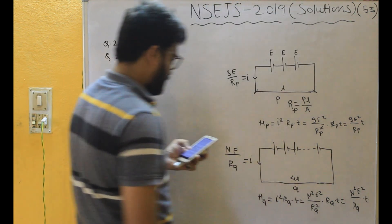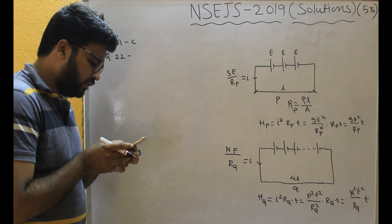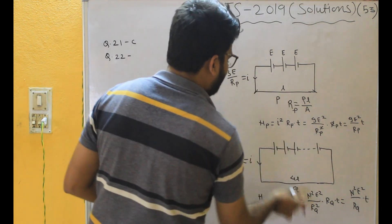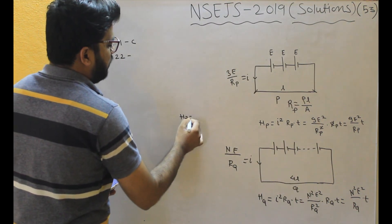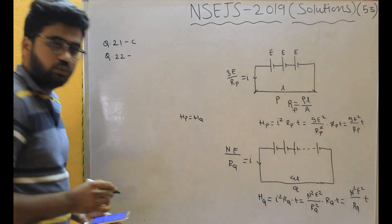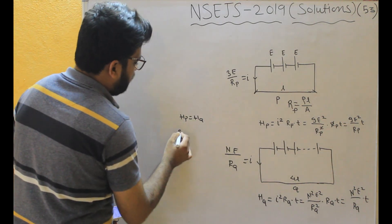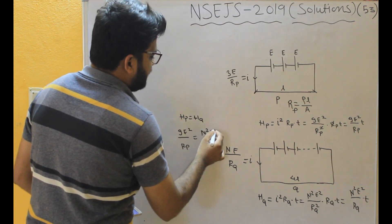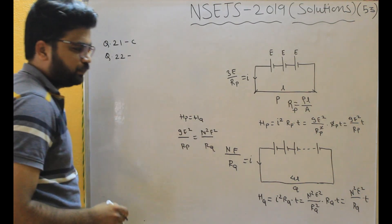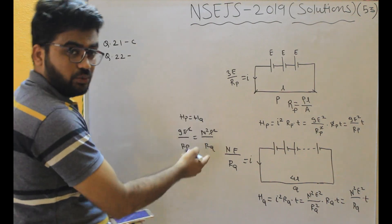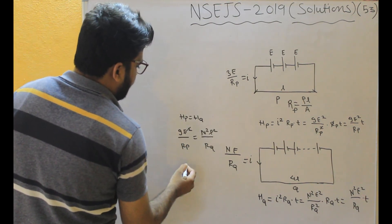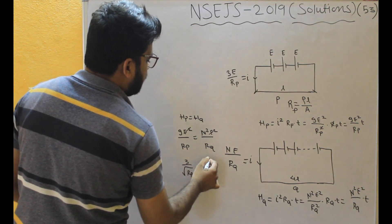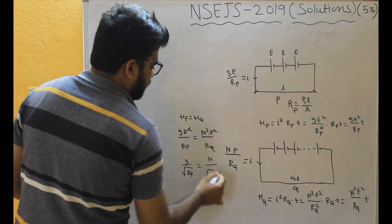They say the heat generated is the same for the same time interval, so H_P = H_Q. Putting in values: 9E²/R_P = N²E²/R_Q. The E² and T terms cancel, giving us 9/R_P = N²/R_Q, which simplifies to 3/√R_P = N/√R_Q.